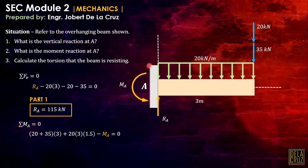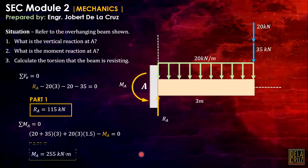That equals minus MA (counter-clockwise) equals zero. Assuming clockwise rotation is positive and counter-clockwise is negative, the moment at A is 255 kilonewton-meters.